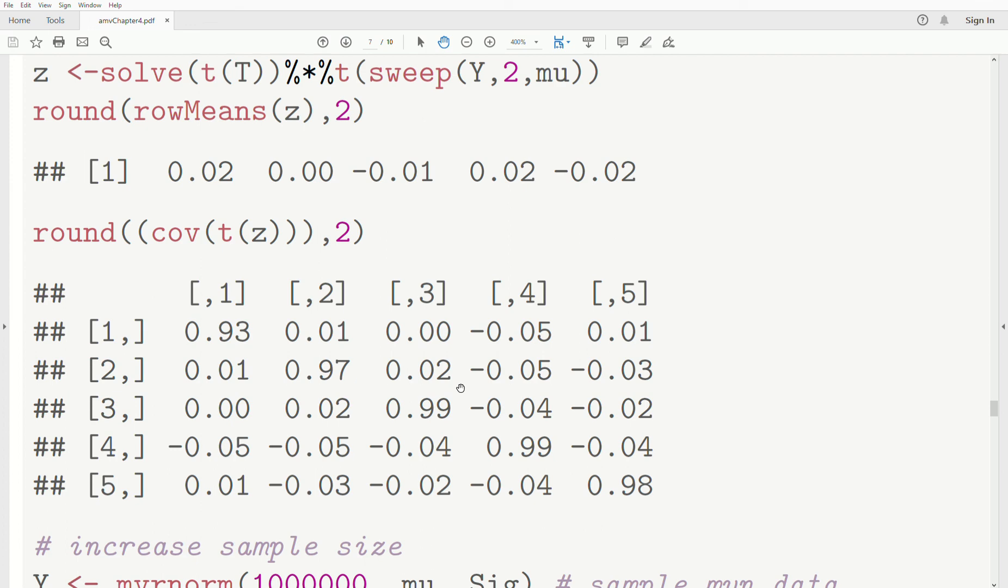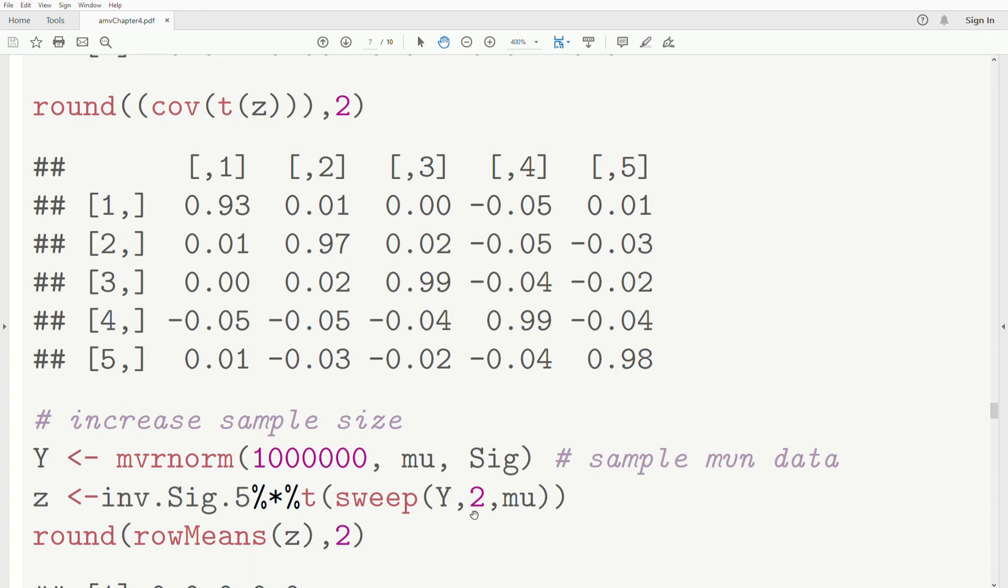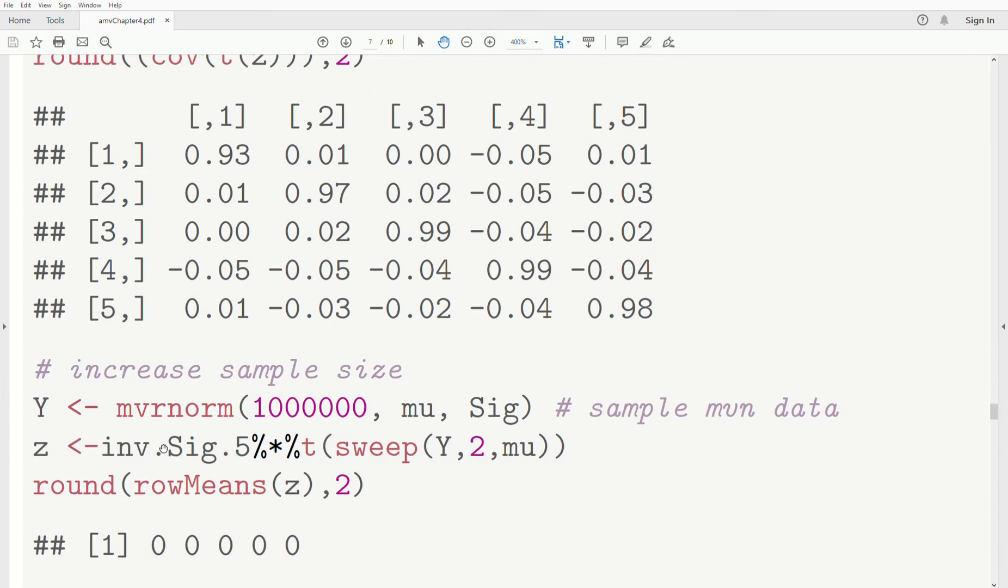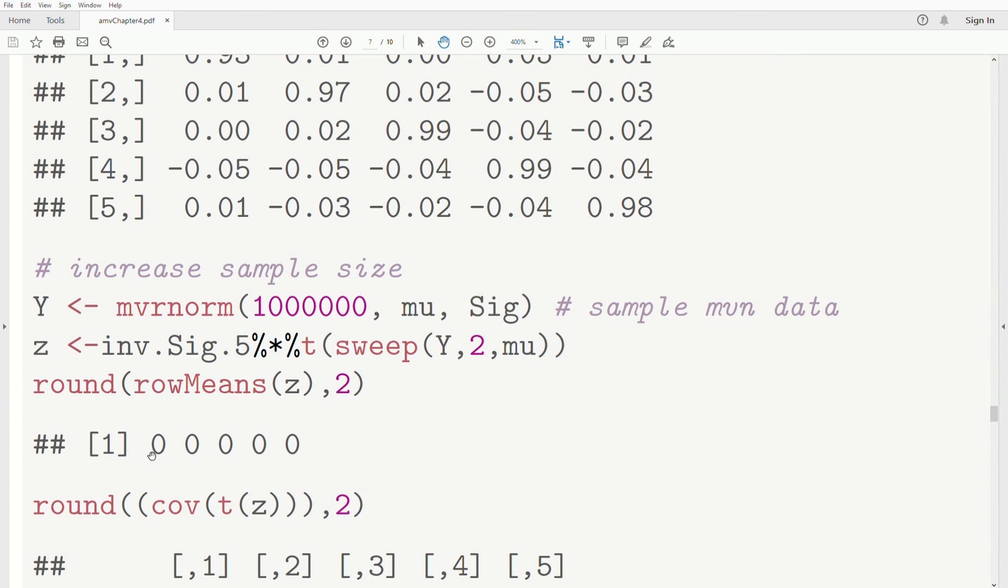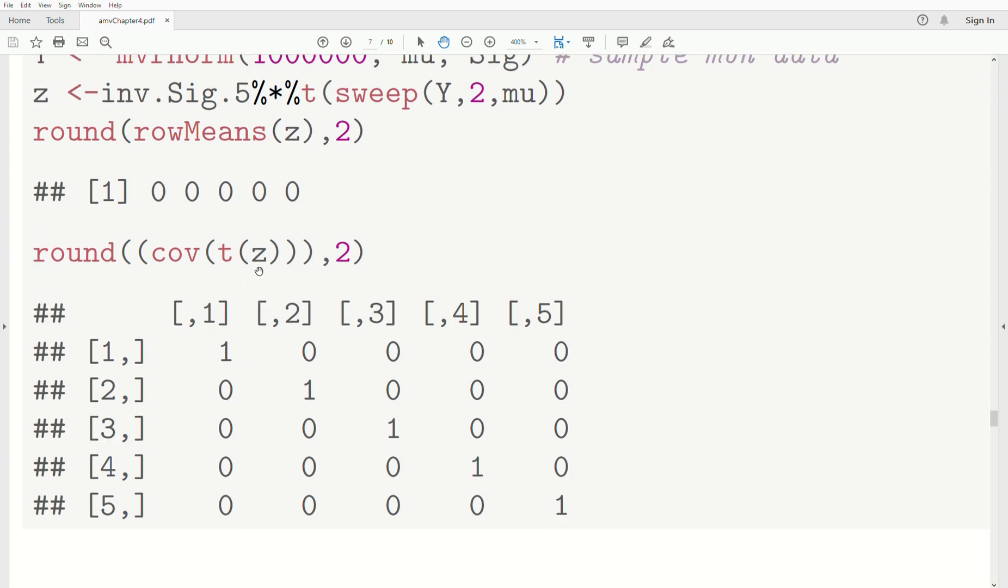Now this is a sample of a thousand, and so to me it agrees with the theoretical results. But if we increase the sample size, then these become more and more close to what the theoretical results is. So let's create a sample size of one million and do the transformation using the inverse square root matrix. And we look at the means, at least rounded to two decimals, it's exactly zero. And then the covariance matrix of Z, our transformation, at least rounded to two decimals, is exactly the identity matrix. So it's really close to the theoretical results.